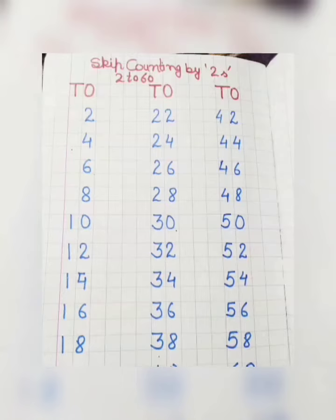22, 24, 26, 28, 30, 32, 34, 36, 38, 40. Woh jump ek ek number ko leave karke karta hai. Thik hai, skip kar deta hai.